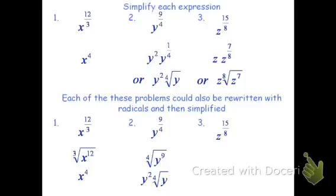We can do the same thing on the next one. Instead of z to the 15 over 8, I can say this is the 8th root of z to the 15th power. 8 goes into 15 once, so I get z to the 1, and I still have 7 left over. So I have z times the 8th root of z to the 7. Either method gives the same answers. You can change any radical to an exponent, or any exponent to a radical — just find one you're comfortable with and use it.